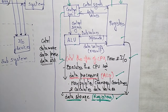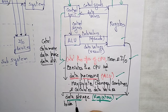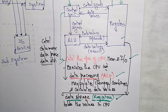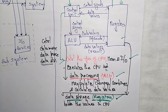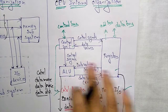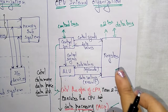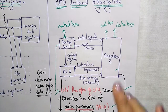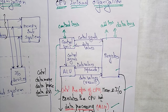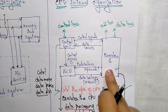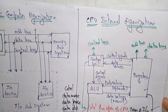Registers hold values inside the CPU, and each register has a unique name for identification in data storage. So, the internal organization of the CPU consists of three main components: the control unit, the arithmetic logic unit, and the registers. These three components handle the main functions: the control unit handles controlling and data movement, the ALU handles data processing, and the registers handle data storage. Thank you.